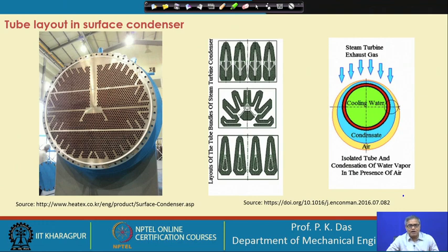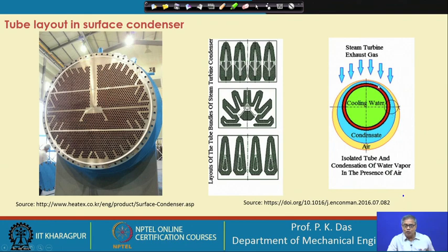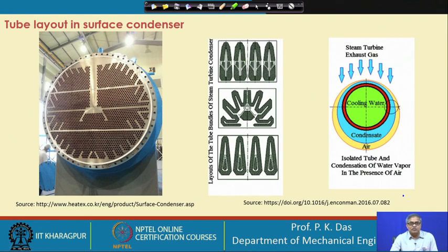When steam comes to the condenser for condensation, it will carry air along with it. Air is a non-condensable. Schematically, the cooling water is inside the tube, outside is the tube wall, then the condensate film, but outside that there will be a layer of air — a fairly dense collection of air — meaning no vapor molecules are nearby. After some time, condensation gets hindered, more air accumulates inside the condenser and its quantity keeps increasing.